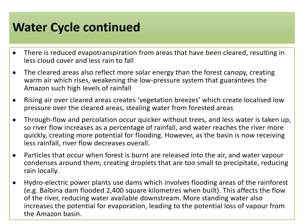The water cycle continued. There is reduced evapotranspiration from areas that have been cleared, resulting in less cloud cover and so less precipitation. The cleared areas also reflect more solar energy than the forest canopy, creating warm air which rises and weakens the low pressure system that guarantees the Amazon such high levels of rainfall. Rising air over cleared areas creates vegetation breezes, which means localised low pressure over the cleared areas receives more rain, stealing water from forested areas. Throughflow and percolation occur more quickly without trees, and less water is taken up, so river flow increases as a percentage of rainfall and water reaches the river more quickly, creating potential for flooding. However, as the basin is now receiving less rainfall overall, river flow decreases overall.